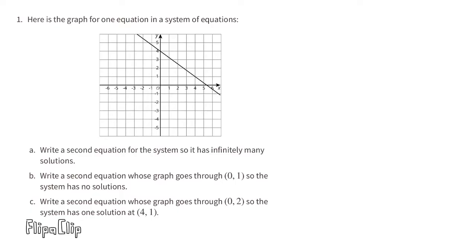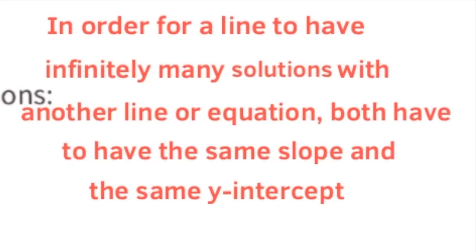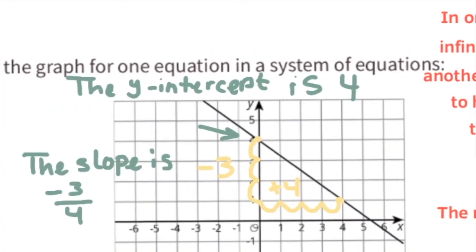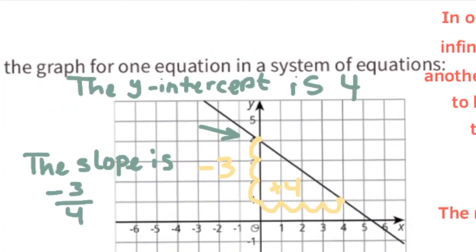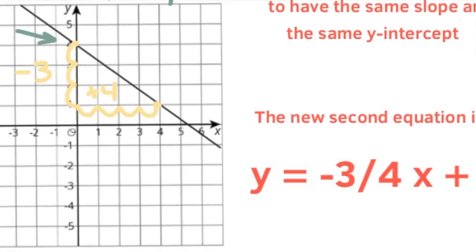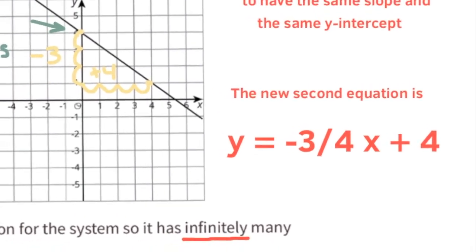Problem number 1. Here is the graph for one equation in a system of equations. Part A: Write a second equation for the system so it has infinitely many solutions. In order for a line to have infinitely many solutions with another line, both have to have the same slope and the same y-intercept. For this line, the y-intercept is 4 and the slope is negative three-fourths. So we could write the equation y equals negative three-fourths x plus 4.